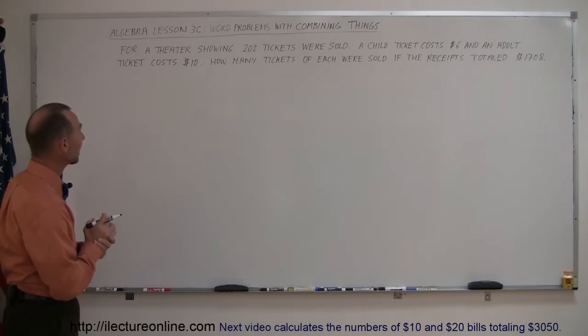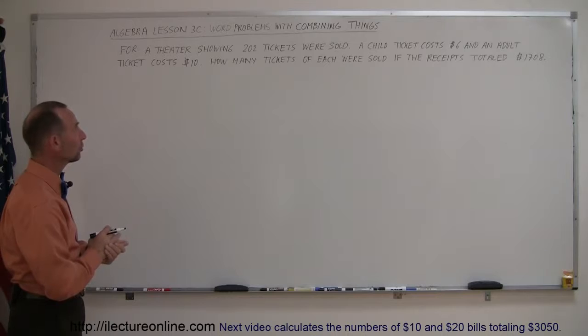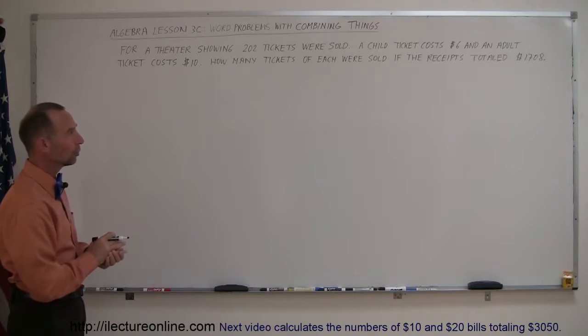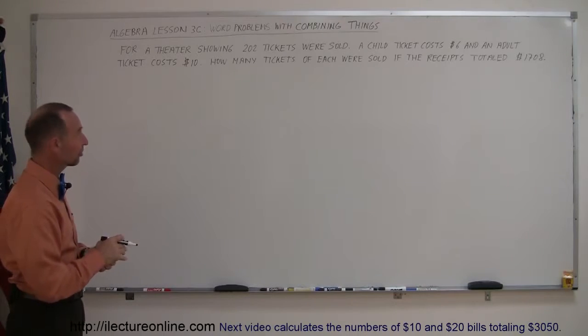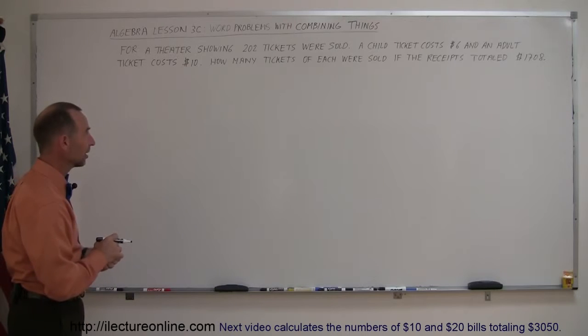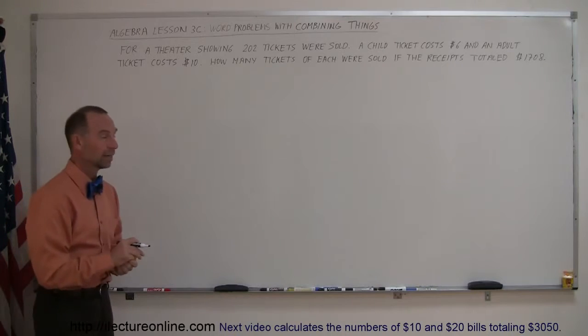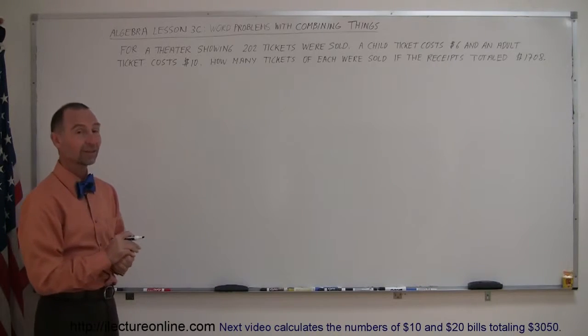It says here, for a theater showing 202 tickets were sold, a child ticket cost $6 and an adult ticket cost $10. How many tickets of each were sold if the receipts totaled $1,708?